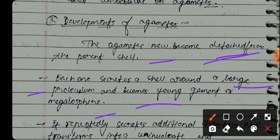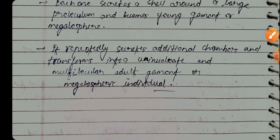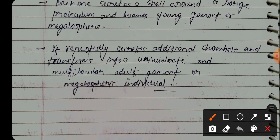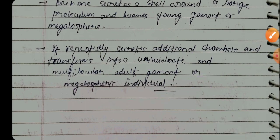The young agamont or megalospheric form rapidly secretes additional chambers and transforms into a uninucleate and multi-chambered adult agamont or megalospheric individual. This completes the alternation of generation process.